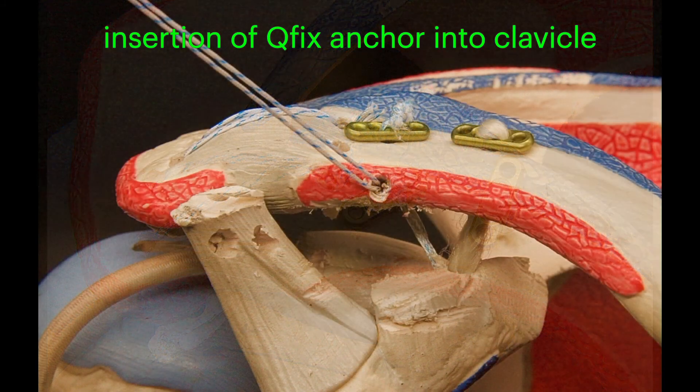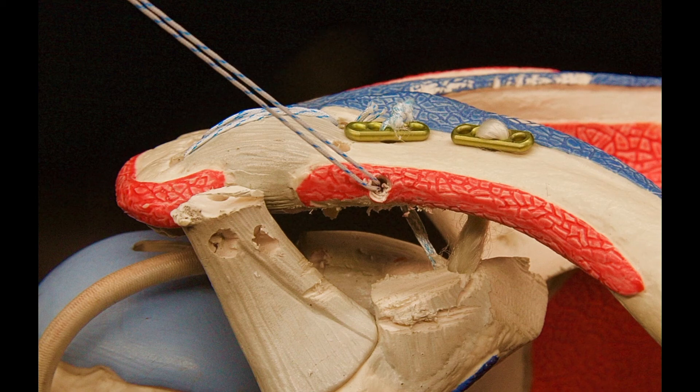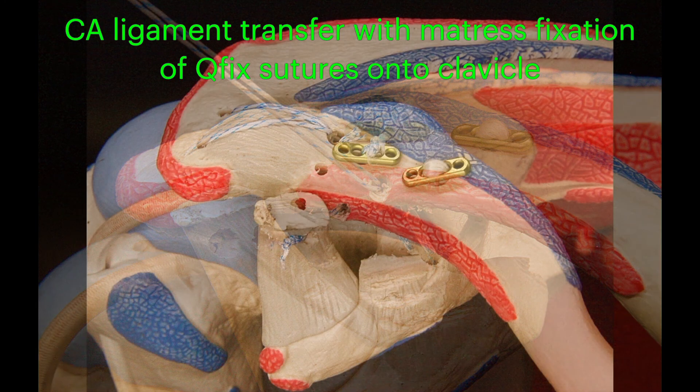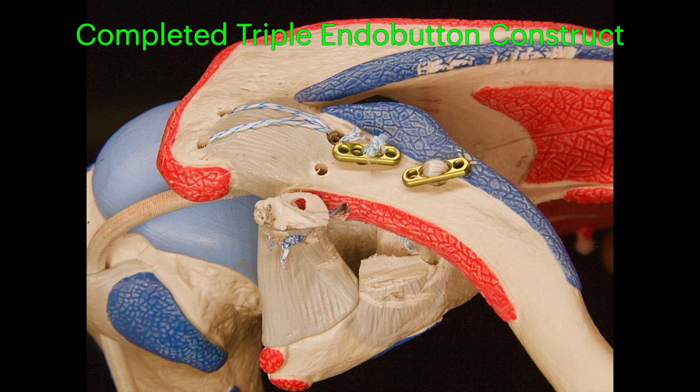A third cufix anchor is then drilled into the anterior superior edge of the clavicle, just in front of the third endobutton. The CA ligament is then transferred over and the cufix suture limbs are passed mattress-style into the substance of the CA ligament, completing the repair.